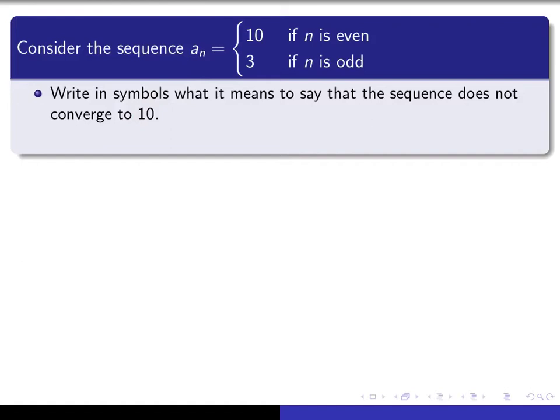Put your video on pause and go ahead and do that. So here's my answer. It says that there exists a positive real number epsilon such that for all natural numbers capital N, there exists a natural number little n such that little n is bigger than or equal to capital N and the absolute value of a sub n minus 10 is bigger than or equal to epsilon.